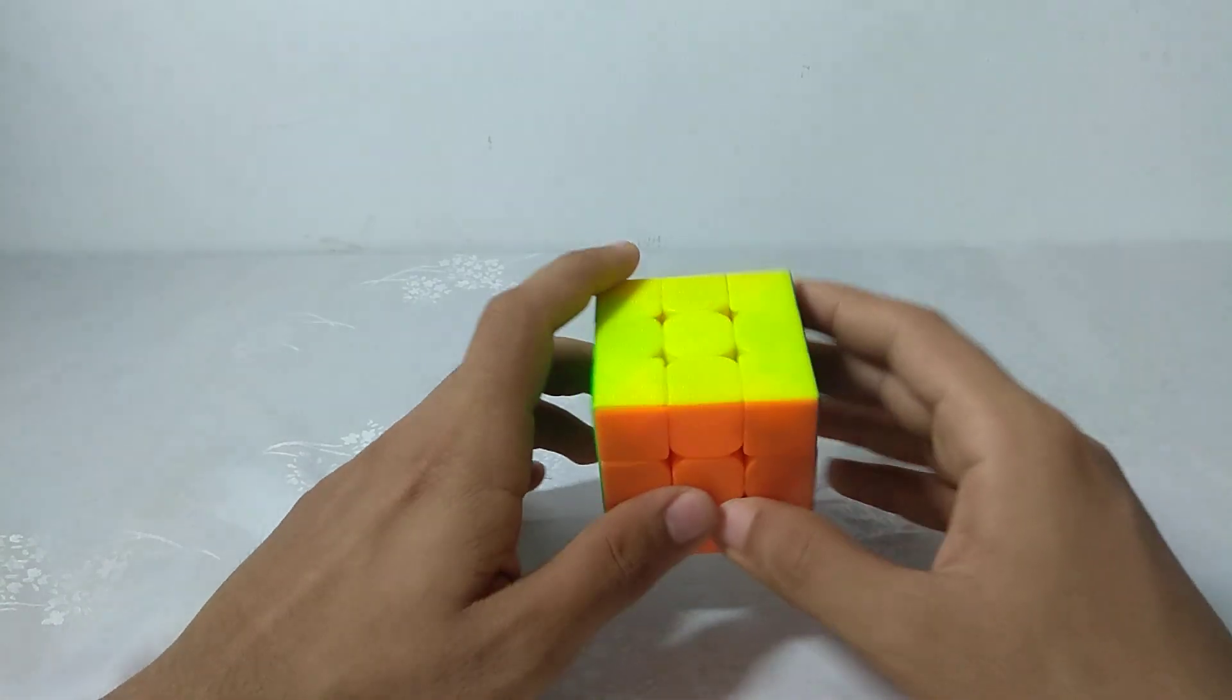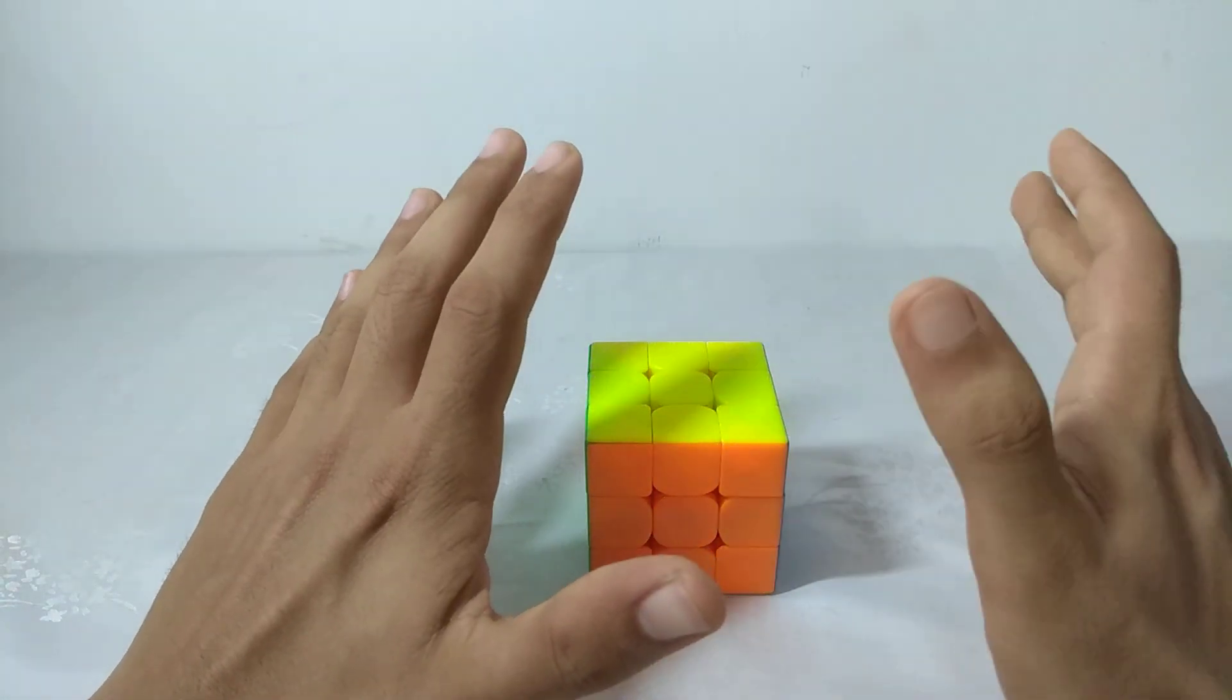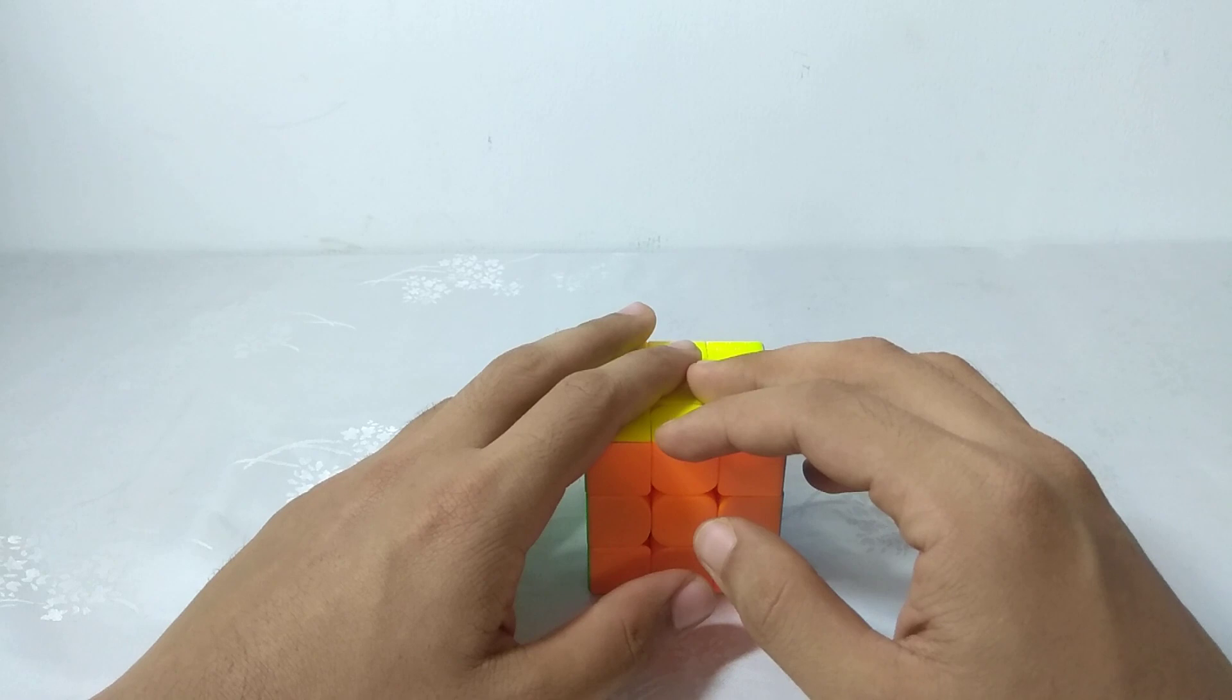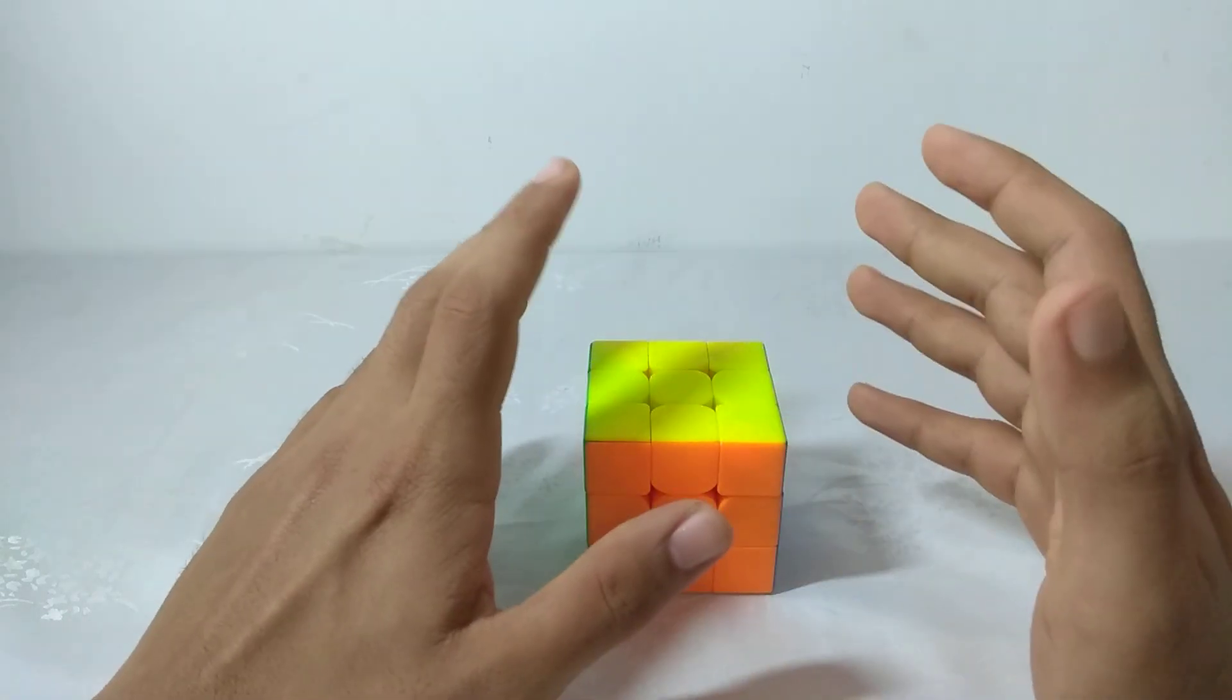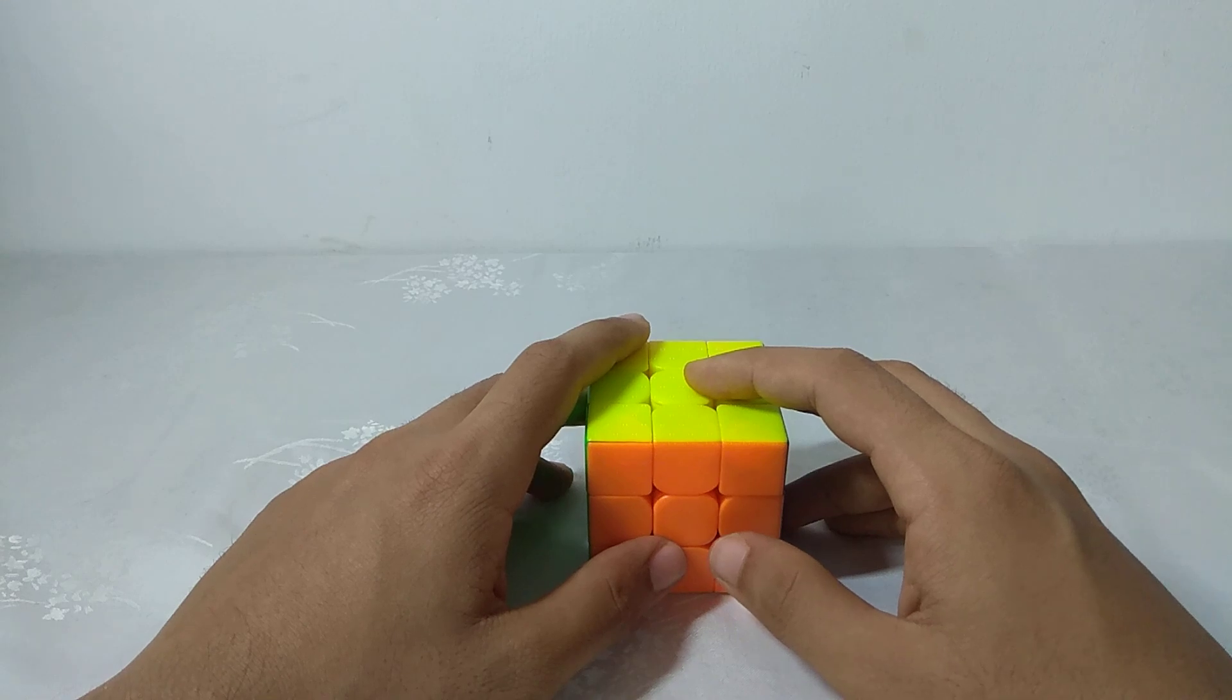You can be sub-30 only if you've done 3BLD for about six months, or three to four months if you're already familiar with blindsolving, and have done more than one thousand solves so you know how to do many things automatically.